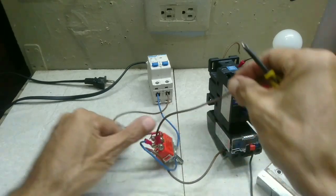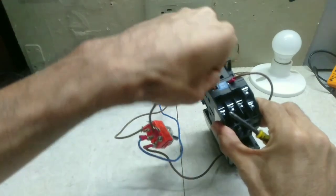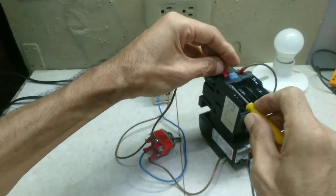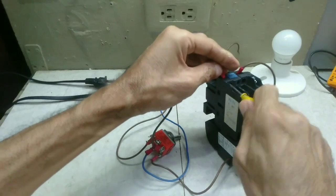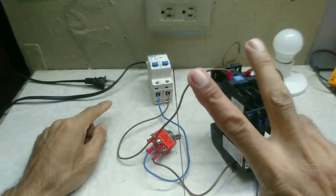This wire will terminate to A1 of the contactor. The two-line is done.